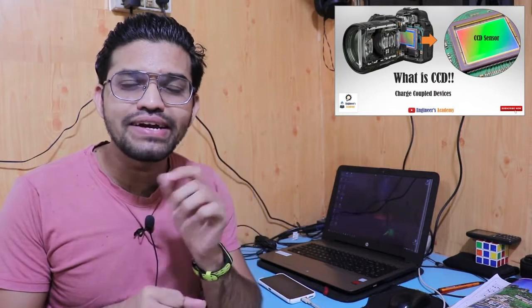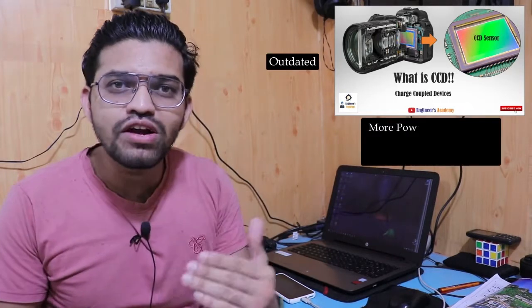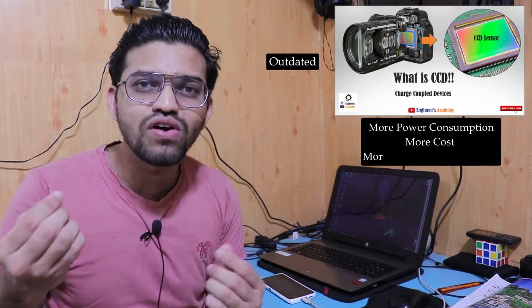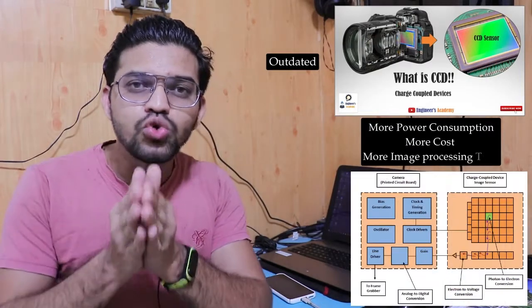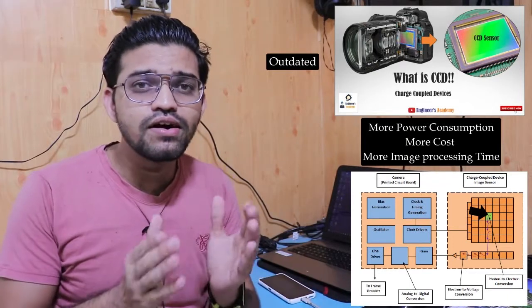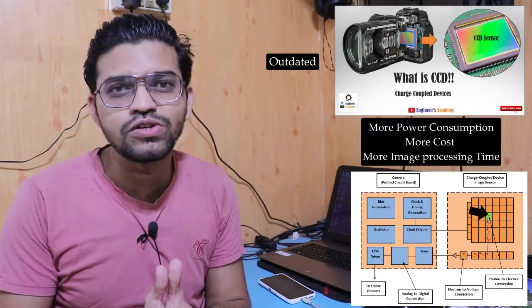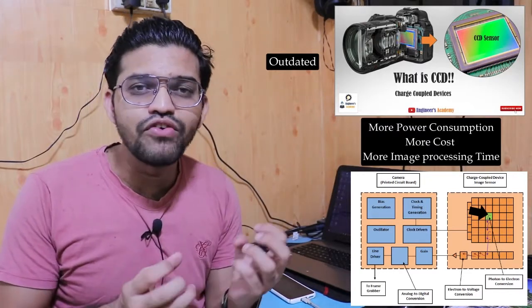In our previous video we learned about the CCD sensor — the charge coupled device. This particular CCD sensor is now outdated because of its high power consumption. It consumes more power to transfer electrical charge to the downward register, and its response time is very slow. This is the reason most smartphones and cameras today are equipped with the CMOS type sensor.